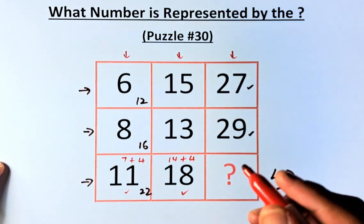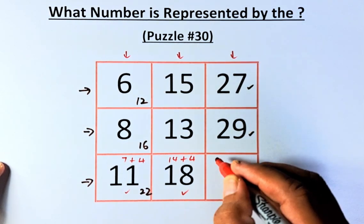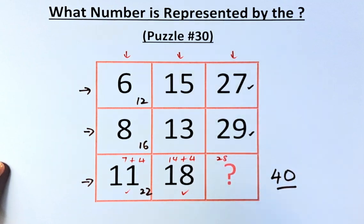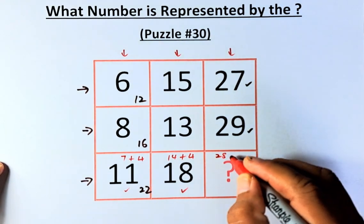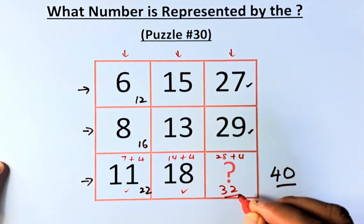the average is going to be 28, because 27 plus 29 is 56 divided by 2. And it's going to be 28. Then you're going to add 4, and the answer is going to be 32.